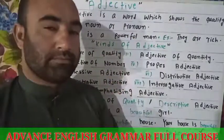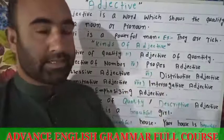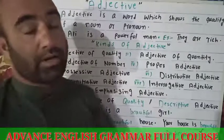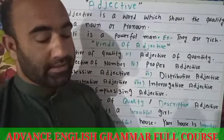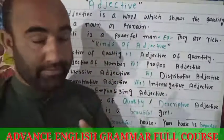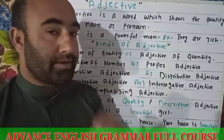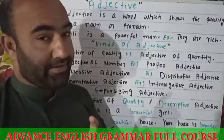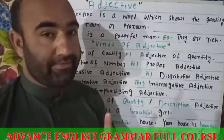First we have to talk about the pronunciation of this word. Some people pronounce it 'adjective,' stressing the wrong letter, but the correct pronunciation is 'adjective' — the second syllable is silent. Adjective. Right.